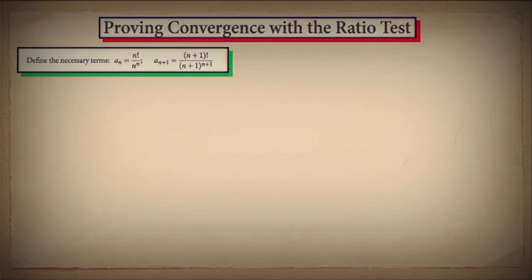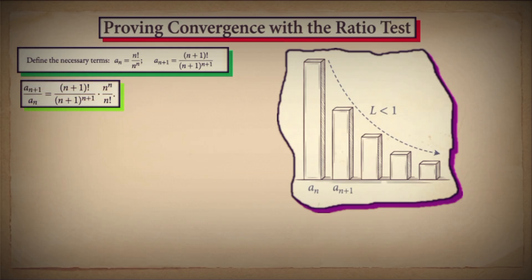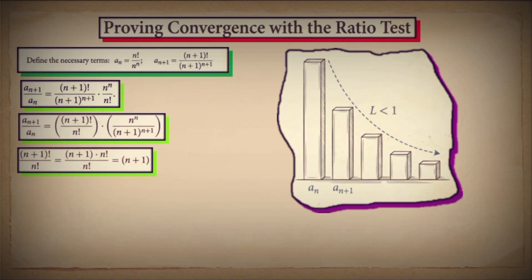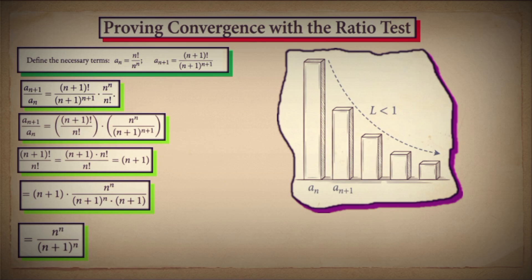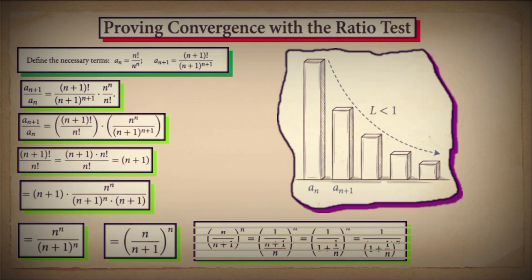We form a sub n+1 divided by a sub n. This ratio works out to (n+1) factorial divided by (n+1) to the power of n+1, all multiplied by n to the power of n divided by n factorial. Now, (n+1) factorial divided by n factorial simplifies to just n+1. For the powers, n to the power of n divided by (n+1) to the power of n+1 equals n to the power of n divided by (n+1) to the power of n times (n+1). Combining the (n+1) terms, they cancel, leaving us with n to the power of n divided by (n+1) to the power of n.